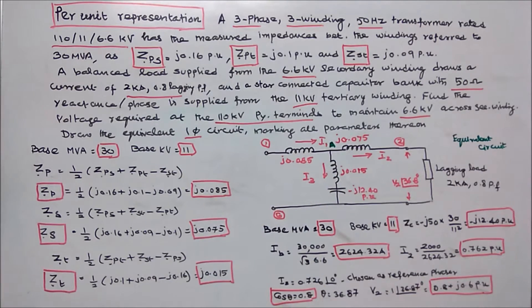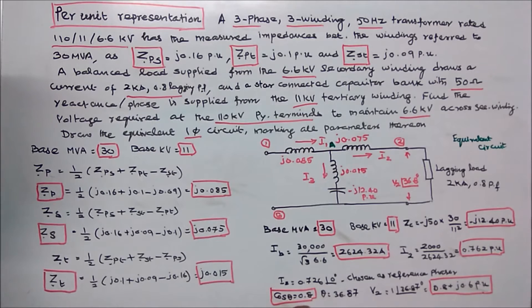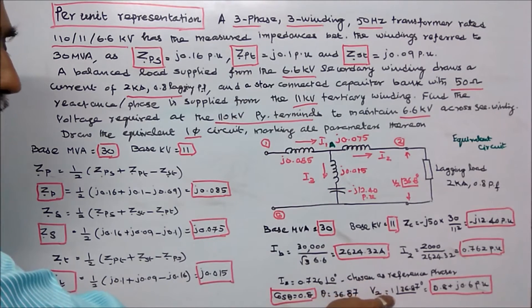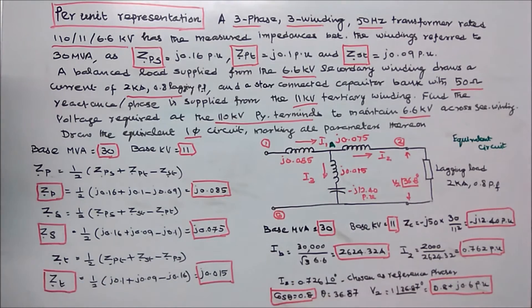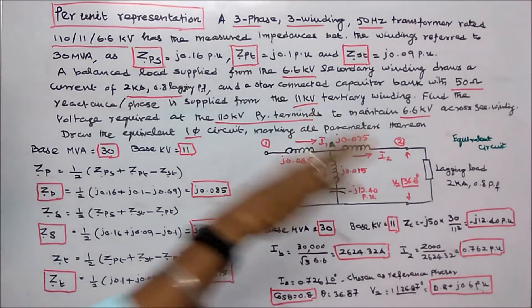Power factor is given 0.8. Cos theta is equal to 0.8, theta is equal to 36.87 degrees. V2 is equal to 0.8 plus J 0.6 per unit.